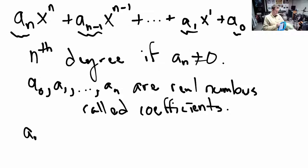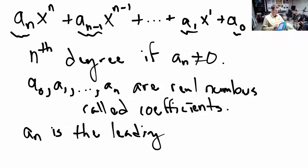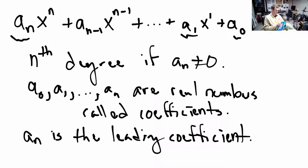A sub n has a special name — it is the leading coefficient. As we'll see later today, it is the number which dictates, in large part, the end behavior of the polynomial. We say 'leading' because it's right in front — it's the first one when the polynomial is arranged in decreasing degree.